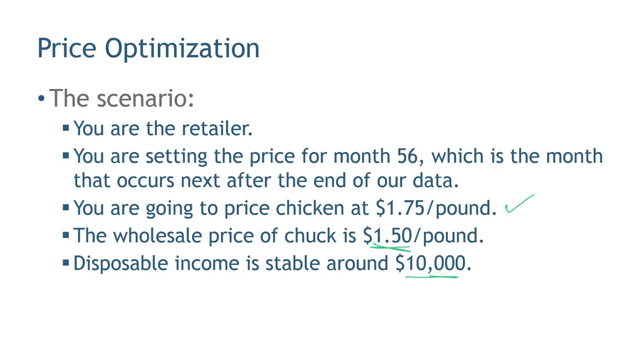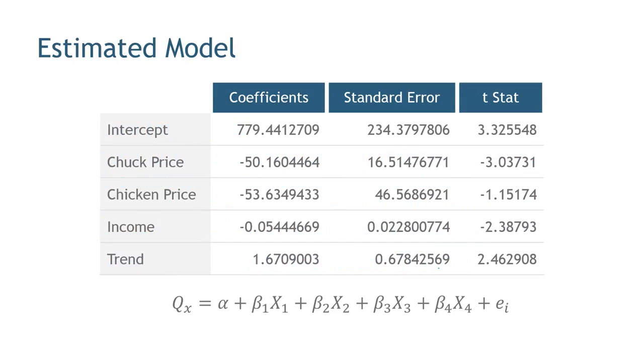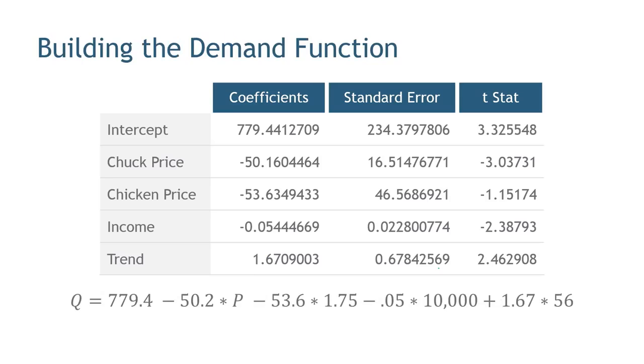And we'll also include that information. So let's do it. So here's our demand model again. These are just the estimated coefficients. And I've written down the theoretical demand model down below it. What have I done? I have substituted in the coefficients. So there's my intercept, 779. I'm going to multiply P by its coefficient, rounded, which is negative 50.2, and so forth.